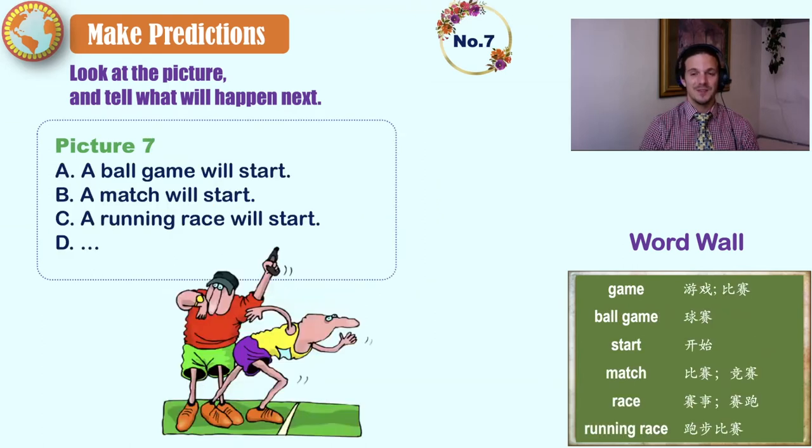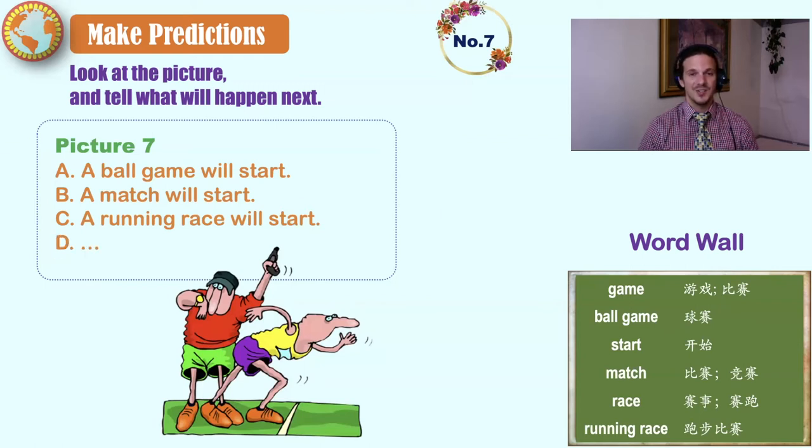Number seven. Game, ball game, start, match, race, running race. A ball game will start. A match will start. A running race will start. The spaghetti will start to cook.